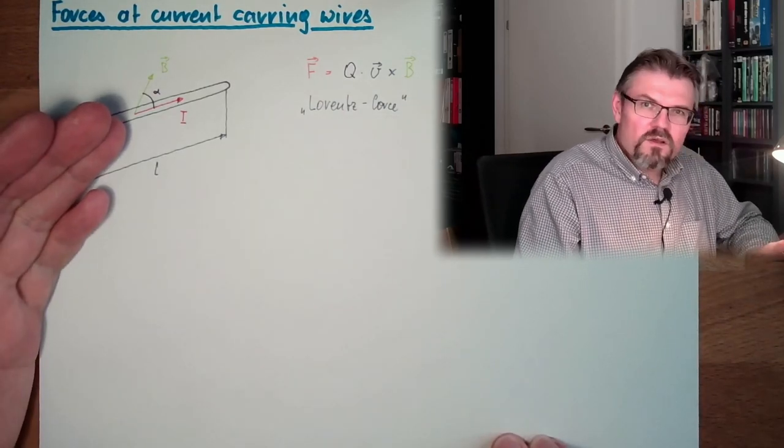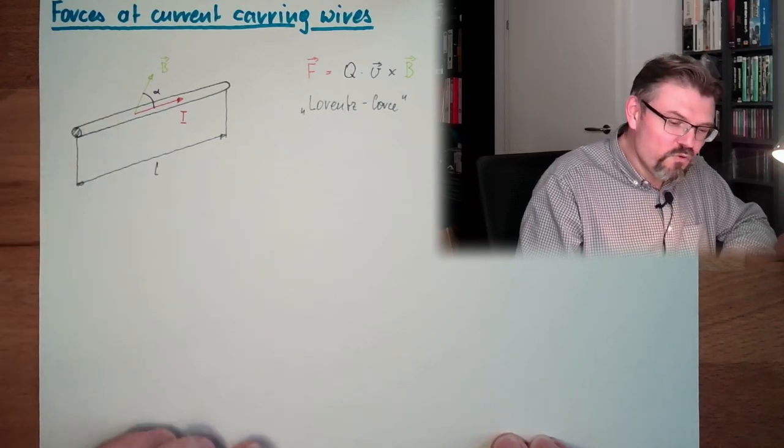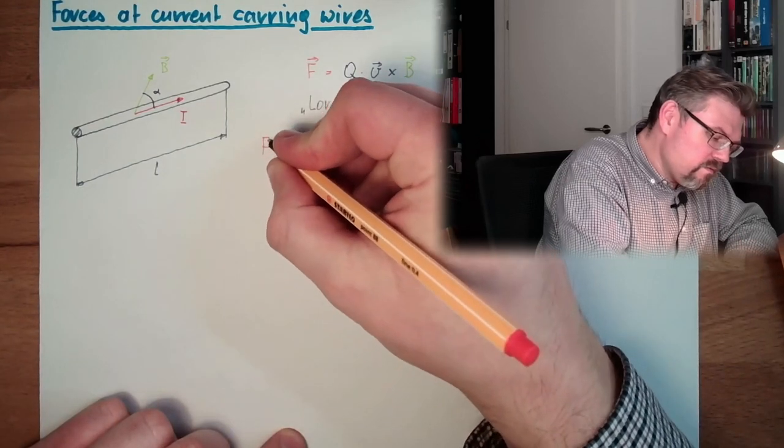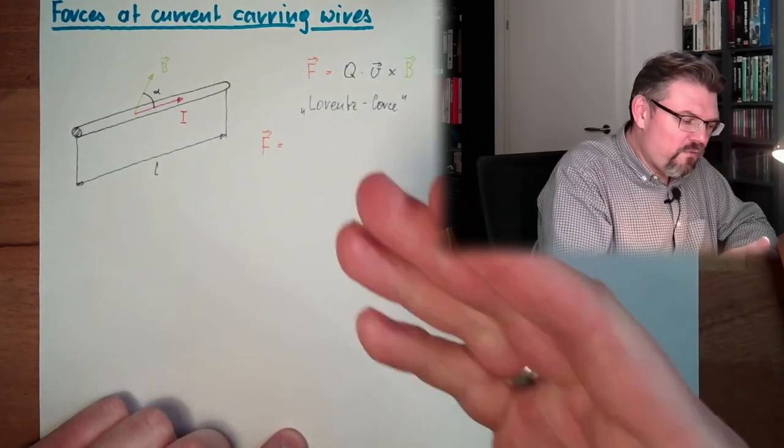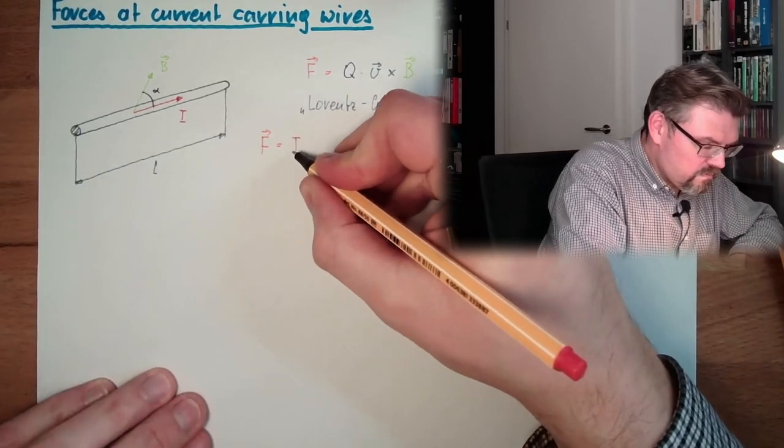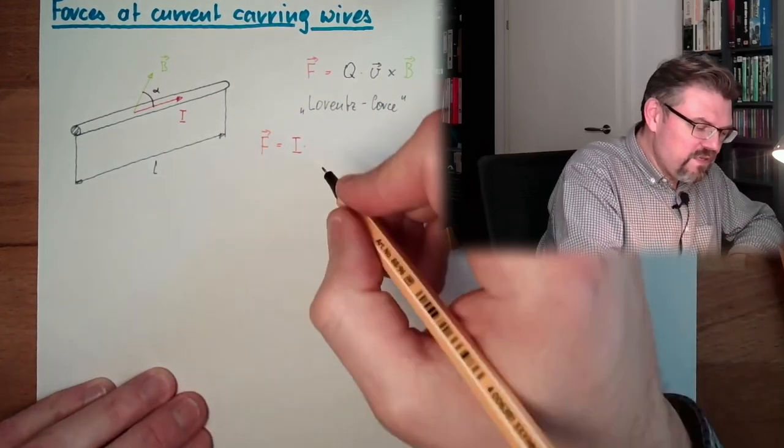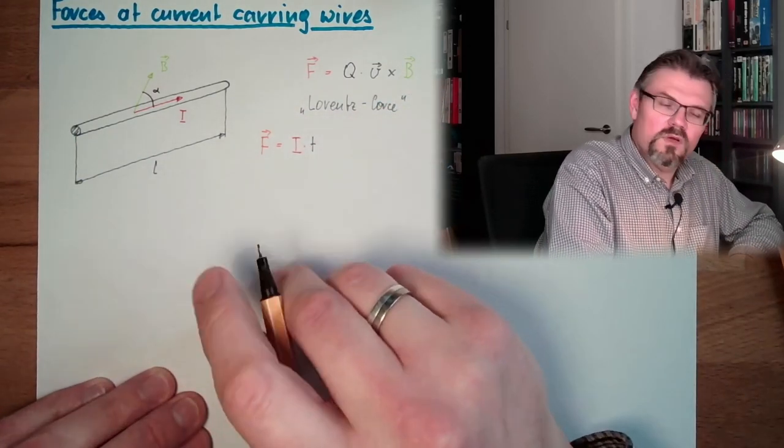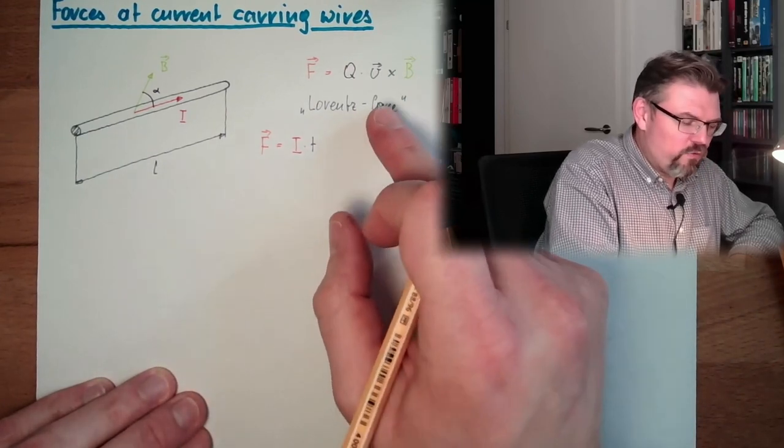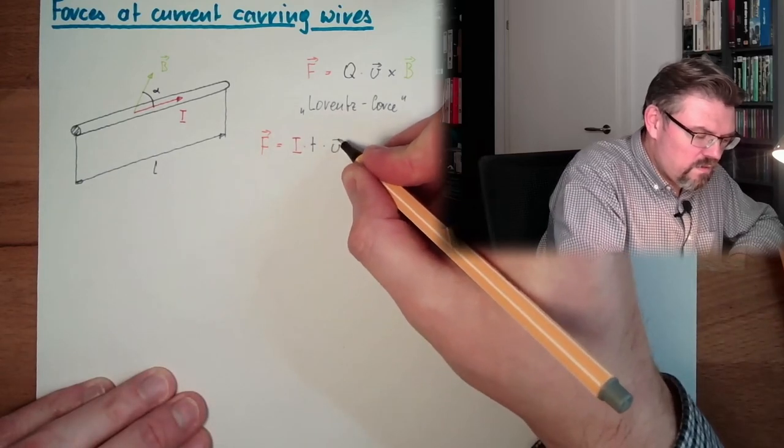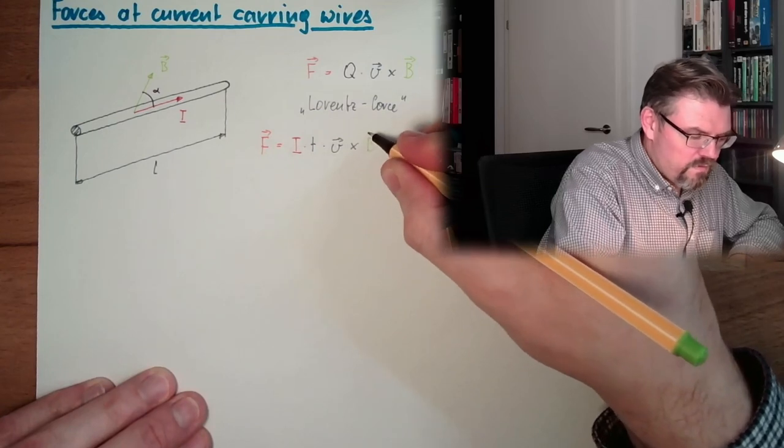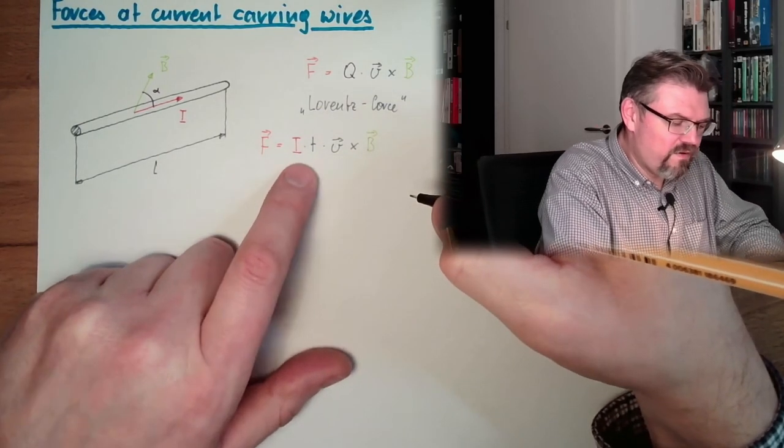What's current? Current is moving charges, right? Current is moving charges. So actually, our F equals, and now what's the moving charge? It's the current I multiplied by the time t. That's q. Coulomb per second multiplied by seconds is Coulomb. And then the rest is not affected. Multiplied by v.